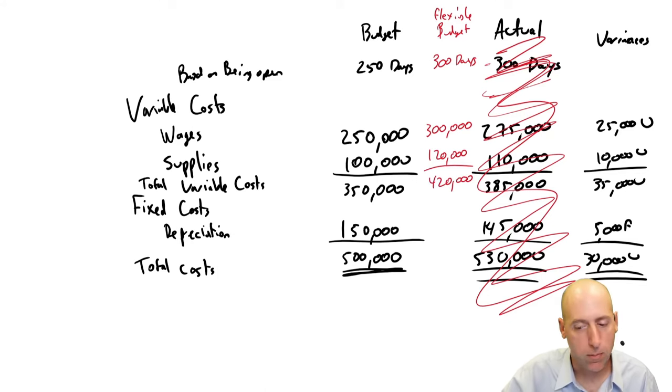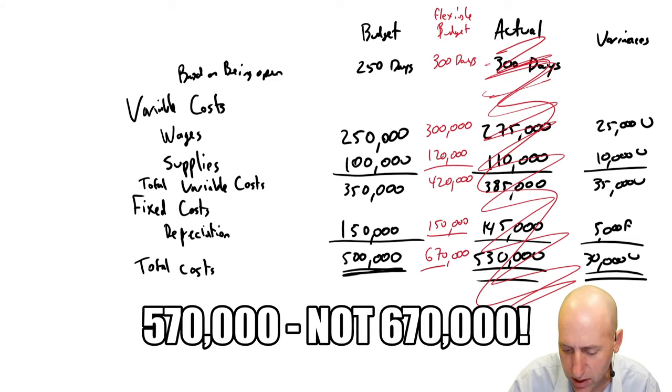Now again, before the year I didn't know I sold this equipment, so I would have just budgeted depreciation to be $150,000. And knowing what I know now, I would have given my friend a $570,000 budget line.